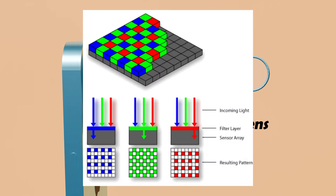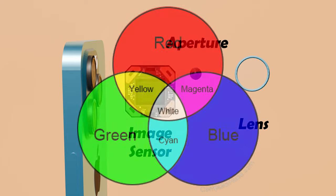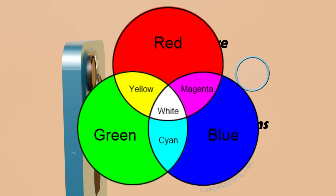The image sensor is made up of millions of tiny pixels, each acting as a light sensitive element. The iPhone 15 Pro has an image sensor of 48 megapixels, meaning it has 48 million of those tiny pixels. Every visible color is made up of a combination of three colors: red, green, and blue.